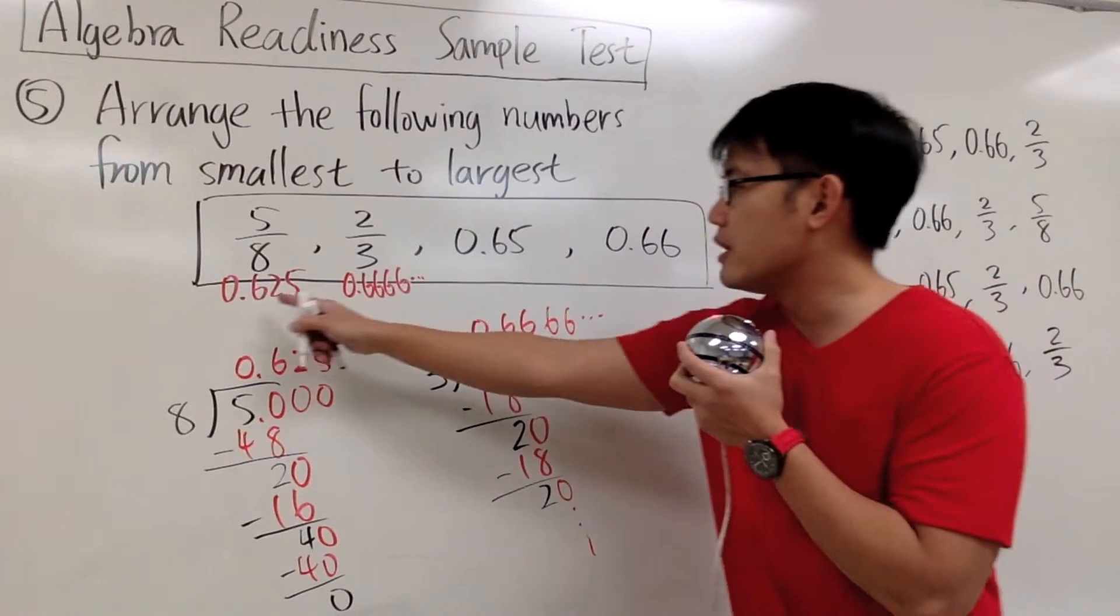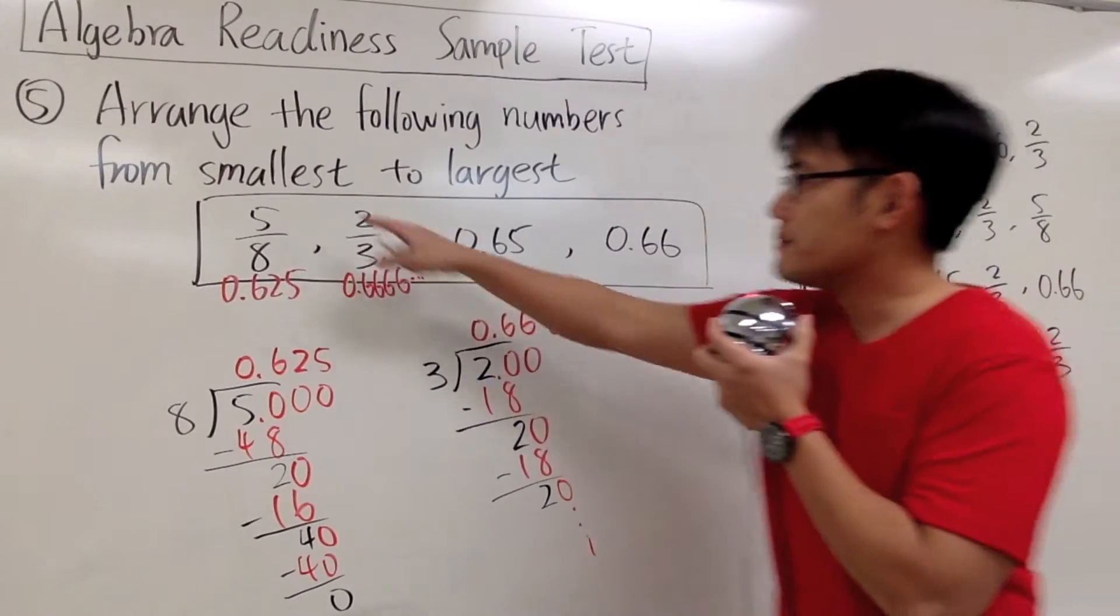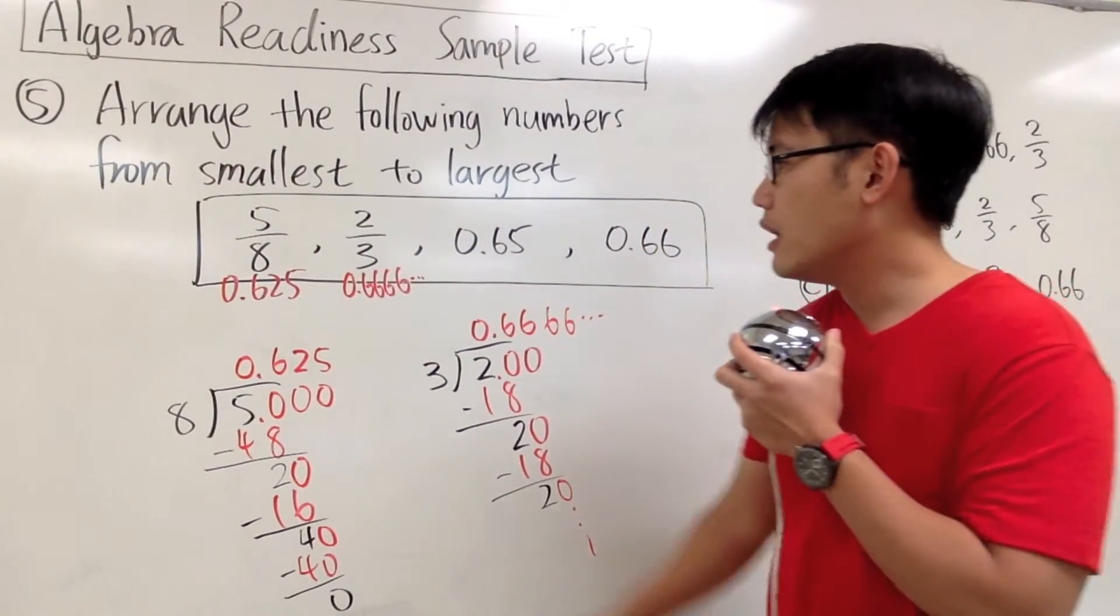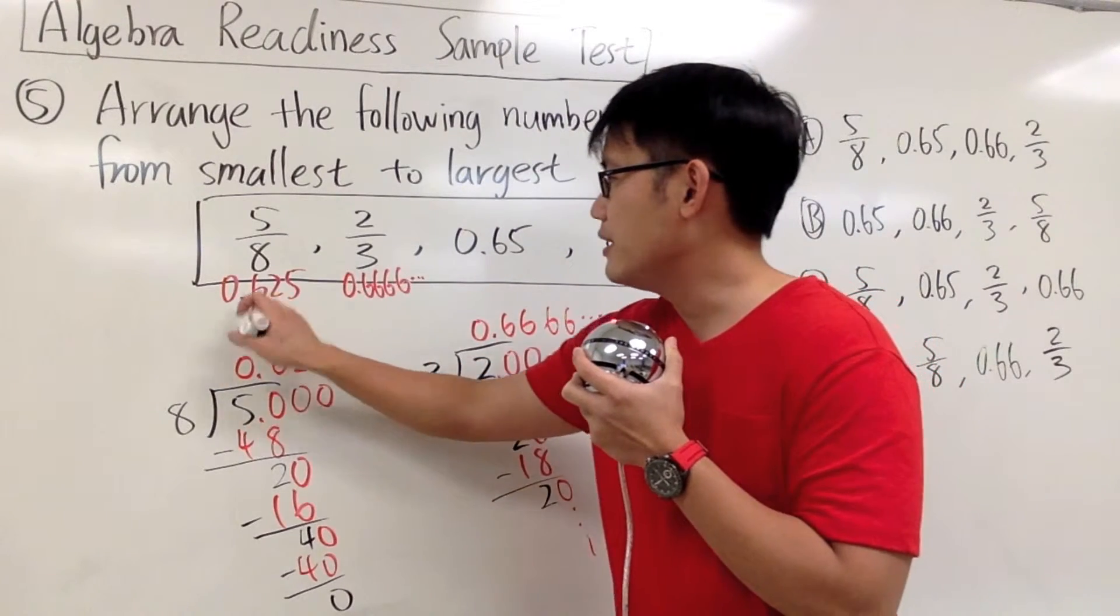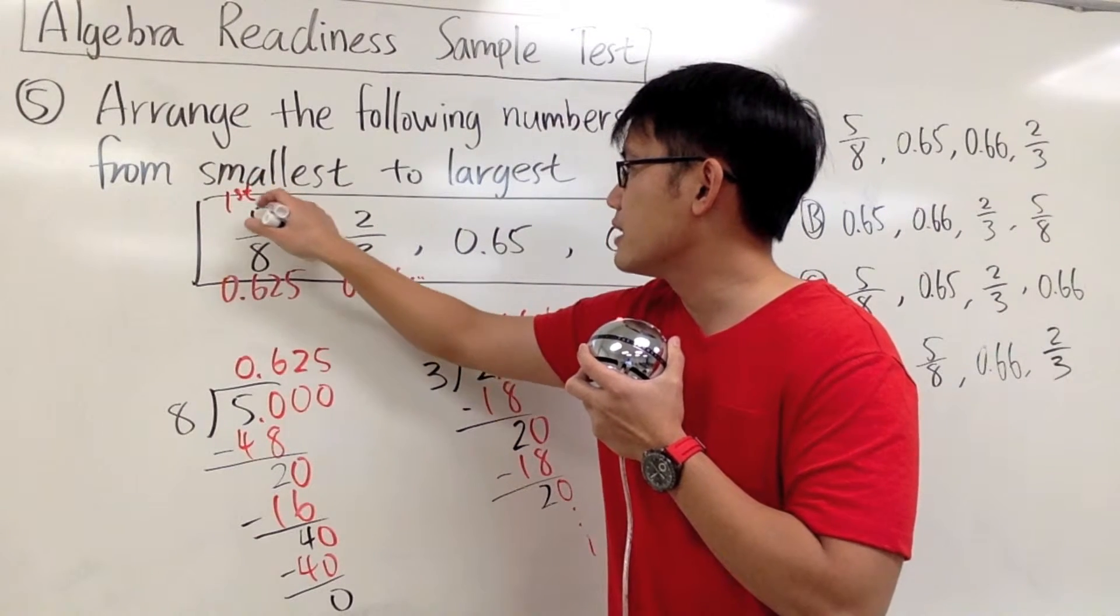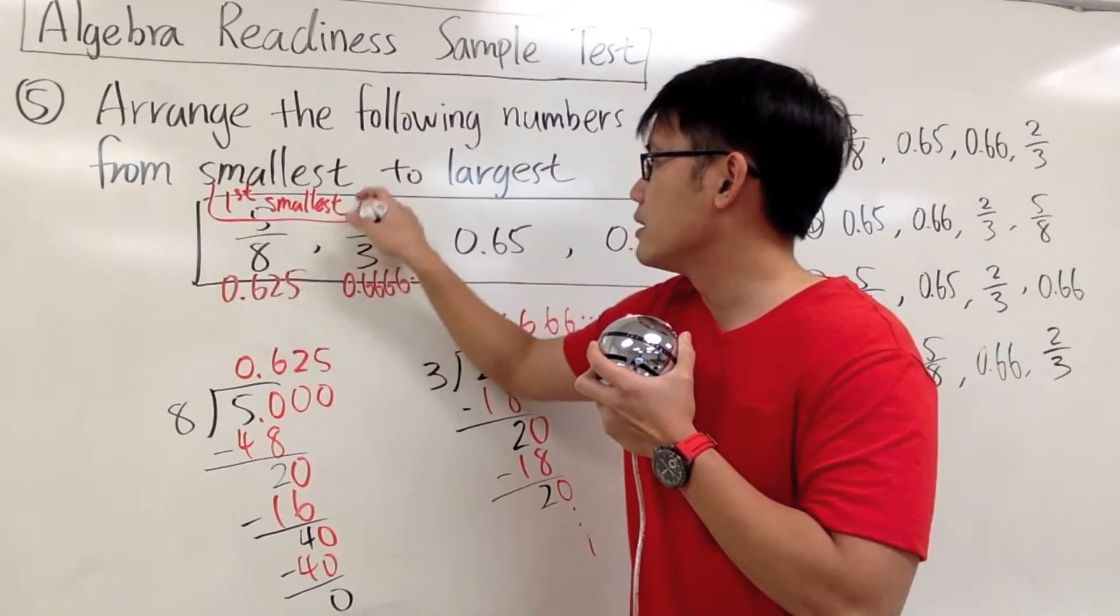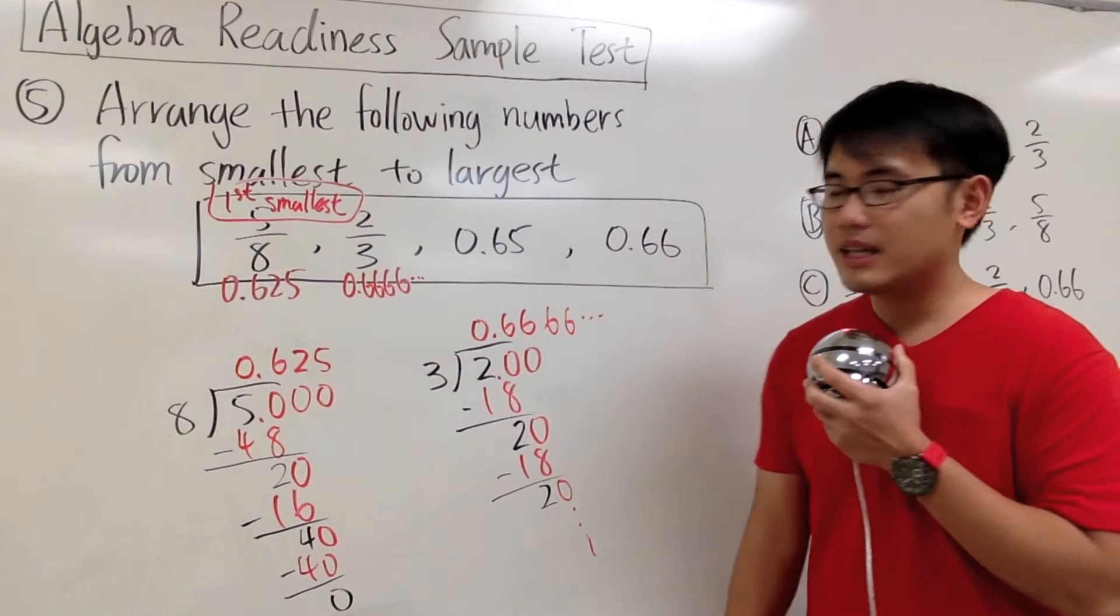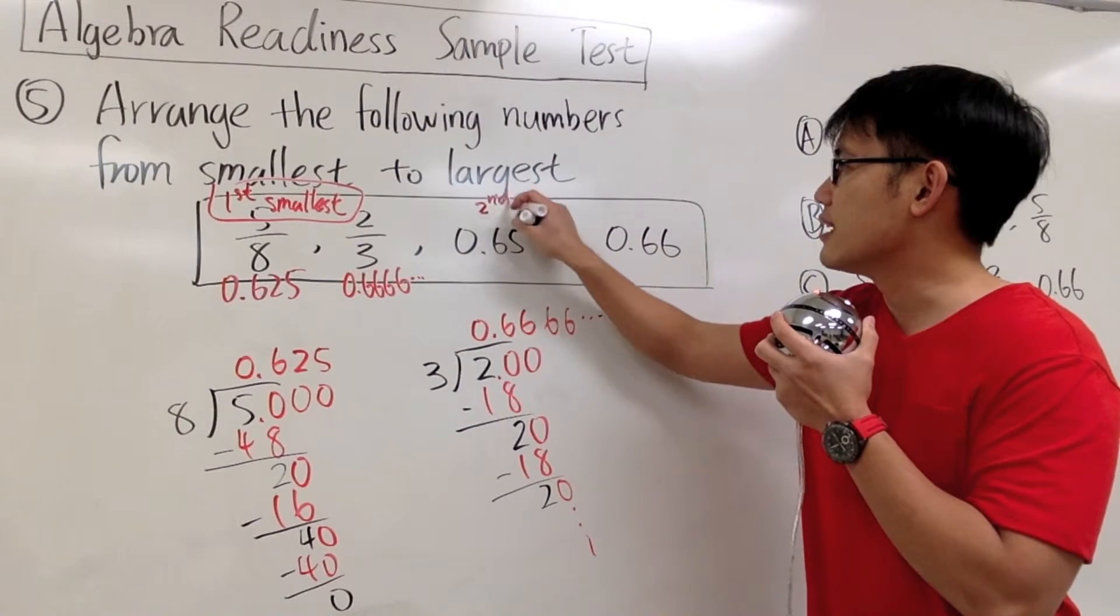Because now we can compare these 4 numbers. Which one is the smallest? Because the question is asking us for the smallest first. Let's find out first. 0.625 is the smallest. So I'm going to indicate this is the first. I'm just going to indicate right here. First smallest. That's the smallest. And which one is the second smallest? 0.65 is the second smallest. So I'm just going to indicate that as the second.